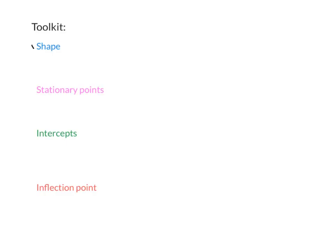The two most important factors for drawing cubic graphs are shape and stationary points. Let's look at shape. What you look at is the coefficient of the x cubed value. If your x cubed value is positive, then your graph will increase first — either increase, decrease, increase, or increase, stationary, then increase.